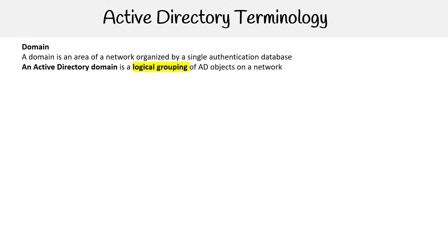The first thing is all about domain. A domain is an area of a network organized by a single authentication database. An Active Directory domain is a logical grouping of AD objects on a network. Think of it like how you have resource groups to logically group your Azure resources — domains are a logical grouping for your AD objects.